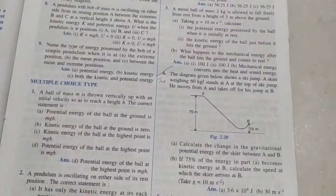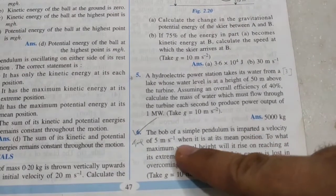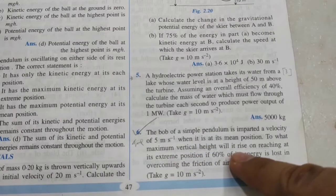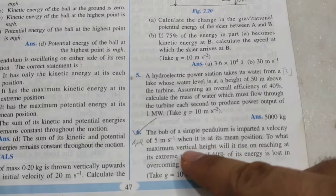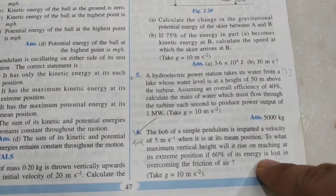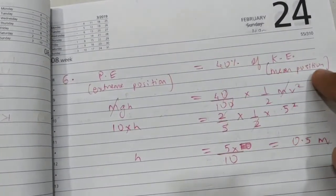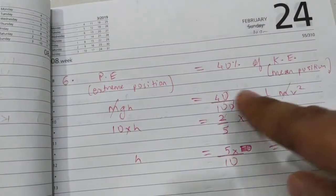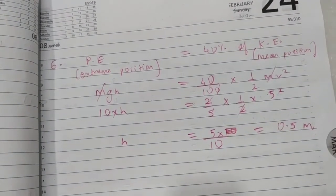Mark the sixth sum and the fourth sum as IMP. In the sixth sum, a pendulum bob is given a velocity of 5 m/s at the mean position. To what maximum vertical height will it rise at the extreme position, given that 60% of its energy is lost to friction? That means the potential energy at the extreme position is only 40% of the kinetic energy at the mean position. Substituting the formulae, mass cancels, and we get the height as 0.5 meter.